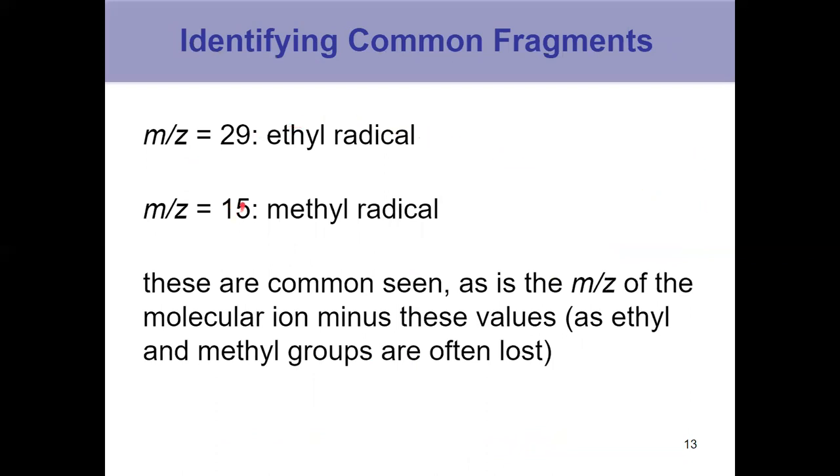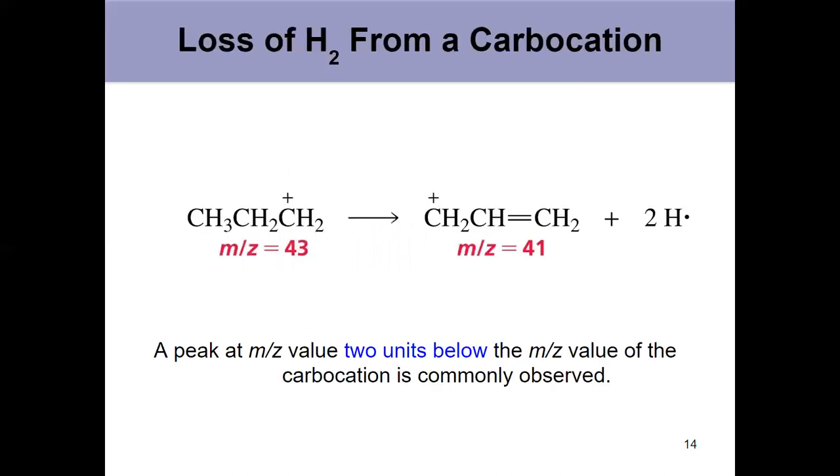Really commonly seen, both those peaks and the M/z of whatever your molecular ion is, 72 for pentane, minus those numbers. It's really easy to lose ethyl groups and lose methyl groups. You'll also occasionally see your molecular ion minus two, losing two hydrogens and forming a pi bond.